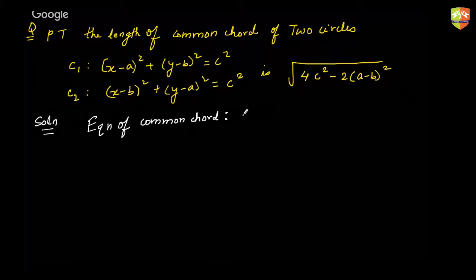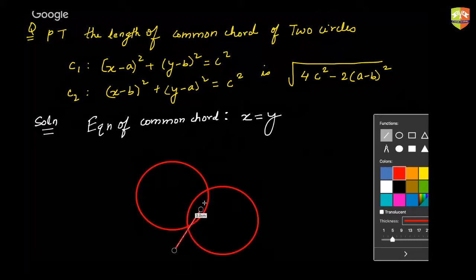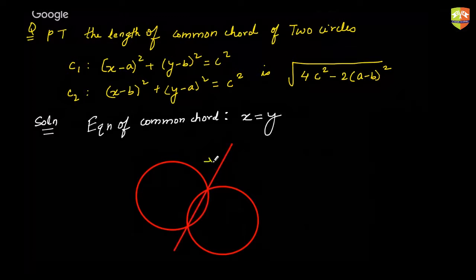The equation of the common chord, as Lalitha rightly pointed out, is x equal to y. So here we have two circles of equal radius intersecting on the line y equal to x. The centres of these two circles are clearly (a, b) and (b, a).